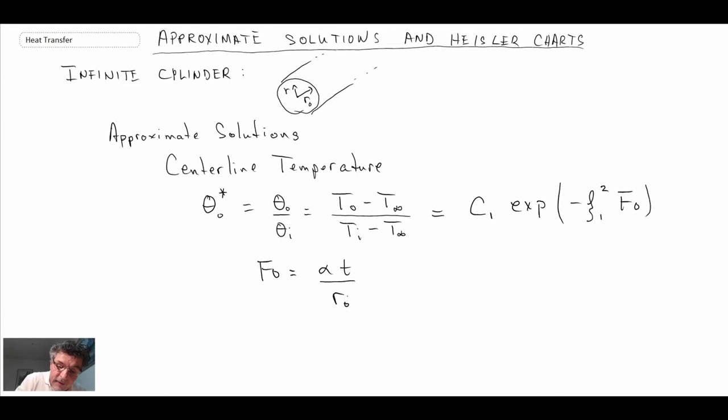Very important non-dimensional number in transient conduction analysis. Now our length scale, you'll notice, before when we had the slab, it was L squared. Now we're dividing by R naught squared.